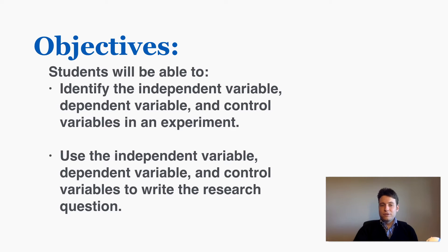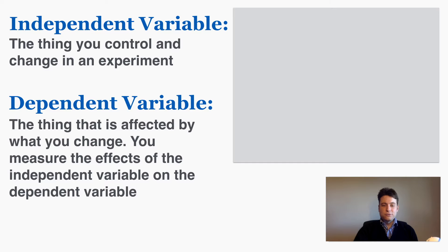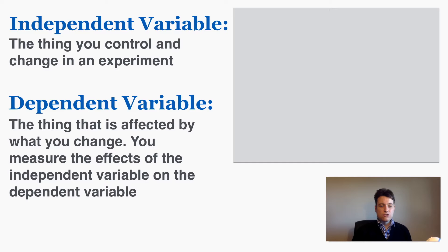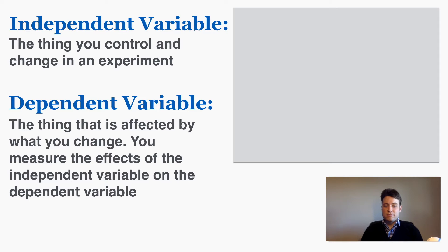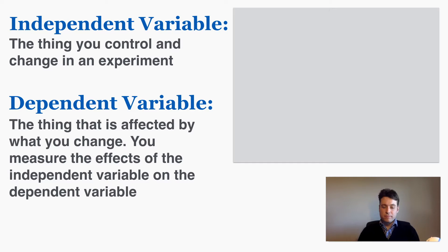So to start off we'll go straight into the definitions. The independent variable in an experiment is the thing you control and change. The dependent variable is the thing that is affected by what you change. You measure the effects of the independent variable on the dependent variable.